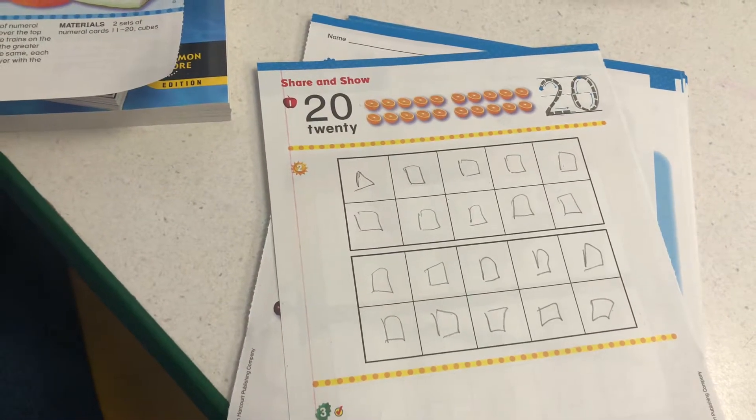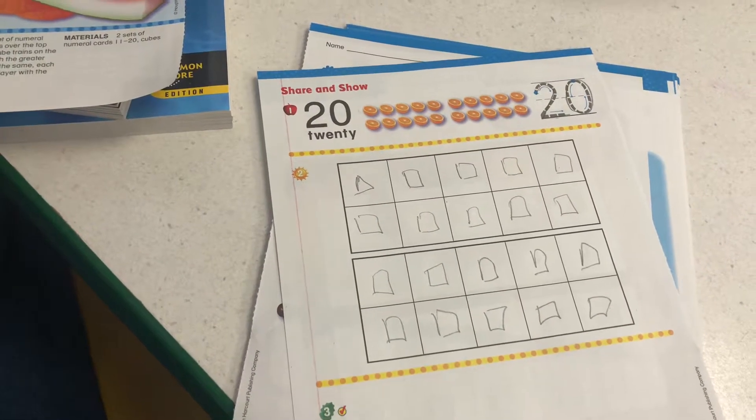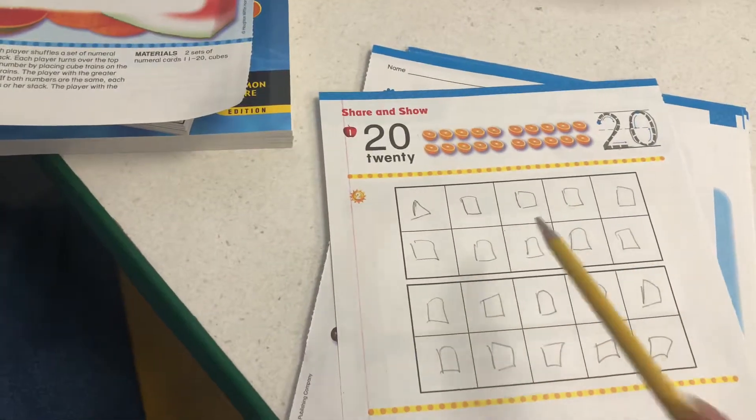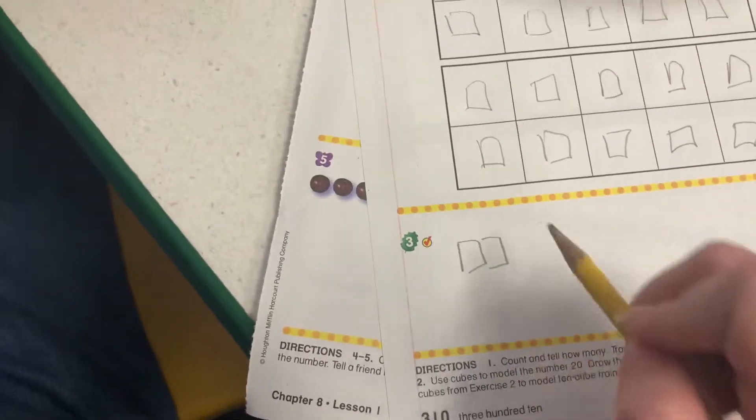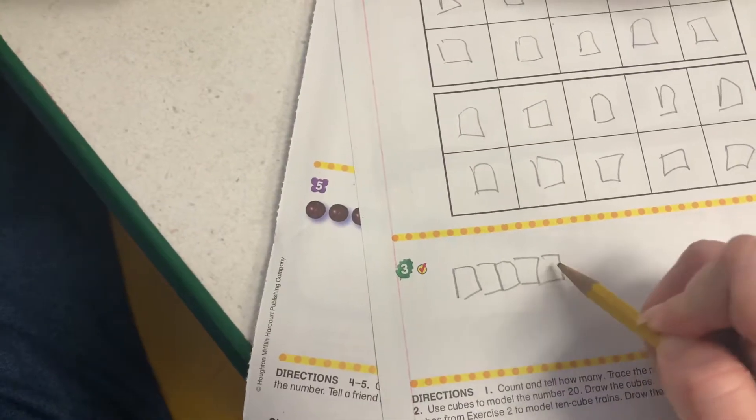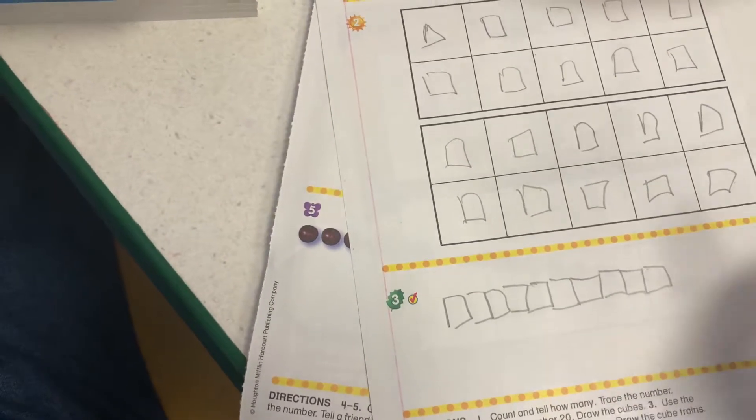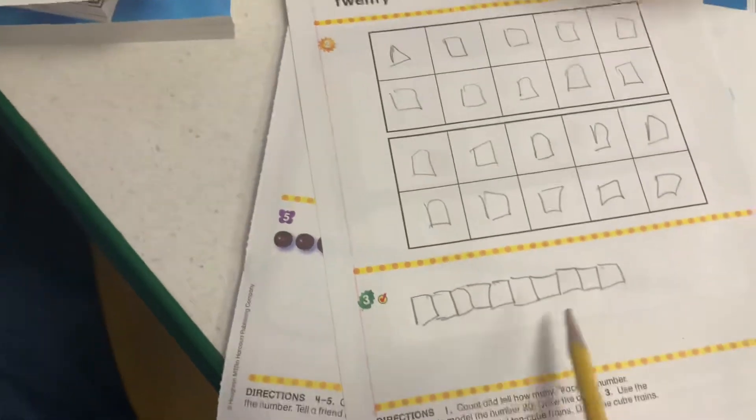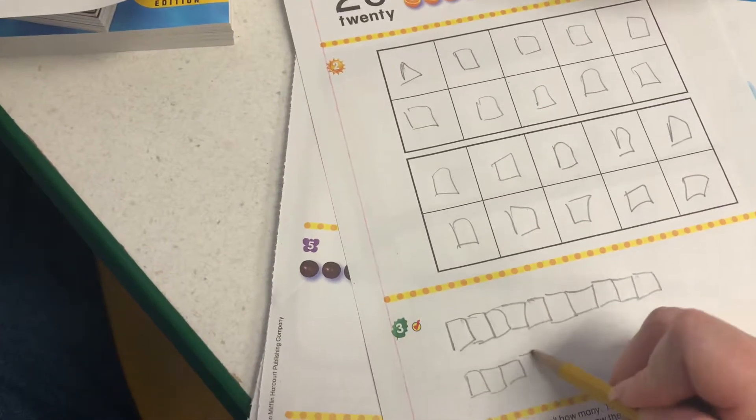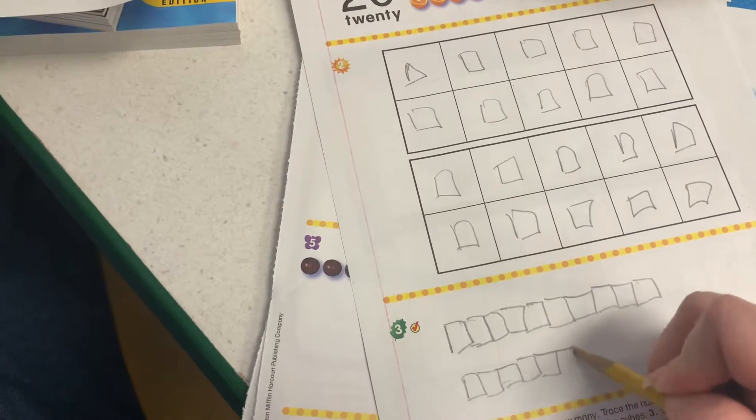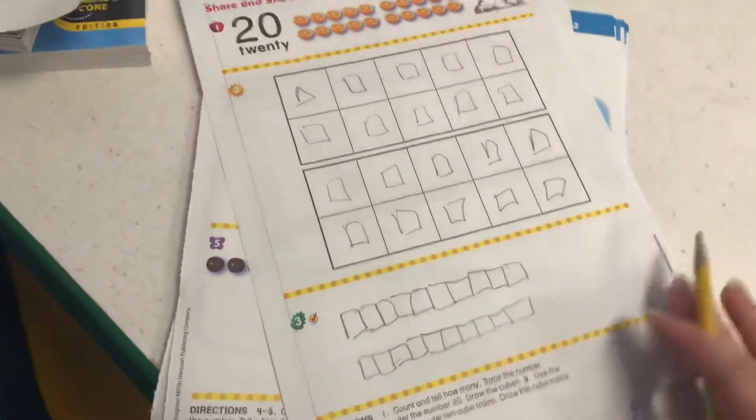Use the cubes to model 10 cube trains. Okay. So now I have this group of 10. I can make this into a cube train, like they're connected together. One, two, three, four, five, six, seven, eight, nine, 10. So there's one cube train of 10. I'm going to do the same thing underneath it. One, two, three, four, five, six, seven, eight, nine, 10. Awesome job.